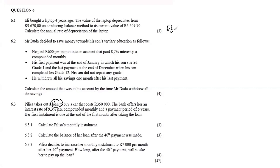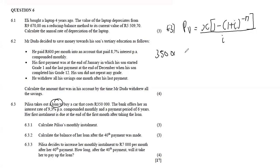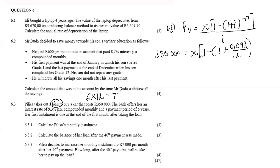PV equals x times [1 minus (1 plus i)^(negative n)] over i. Our present value is R350 000 — the value of the loan. We want to find x — the monthly installment. The interest is 9.3% divided by 100, giving 0.093 compounded monthly so divided by 12. The period is six years, converted to 72 months, and importantly we use negative 72 in the exponent.